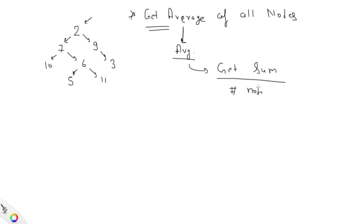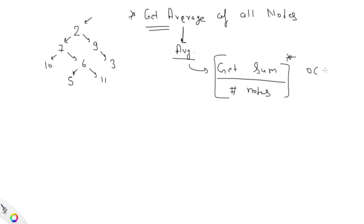So what we need is: sum divided by number of nodes. To get the sum, we traverse the binary tree and take a variable 'sum'. Whenever we visit a particular node, we add its value to sum. After completing the full traversal, we have the sum of all nodes. If there are n nodes, this takes O(n) time.